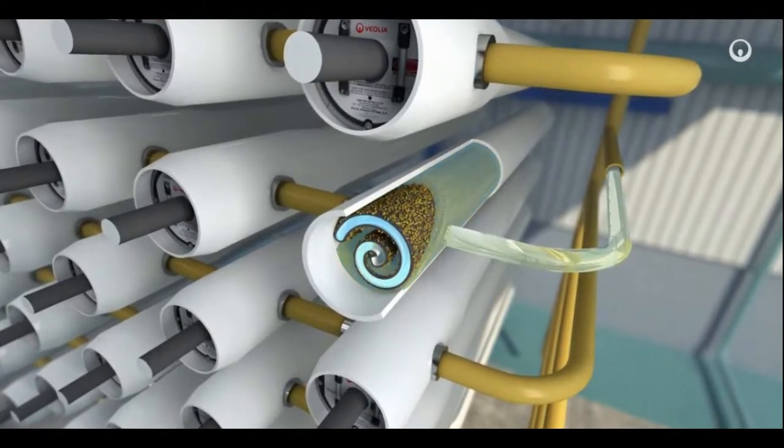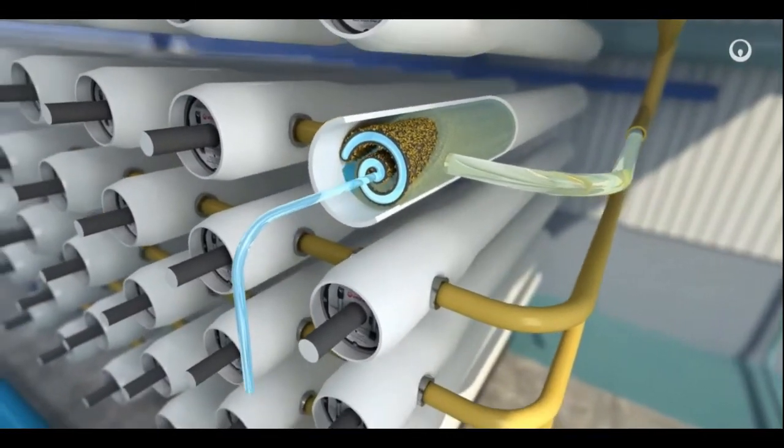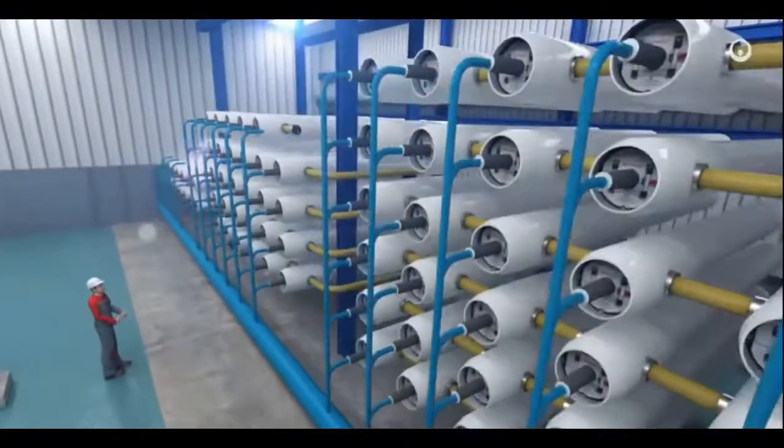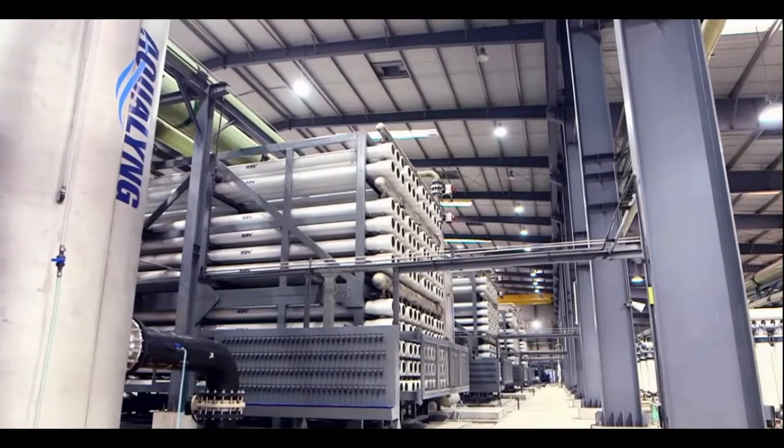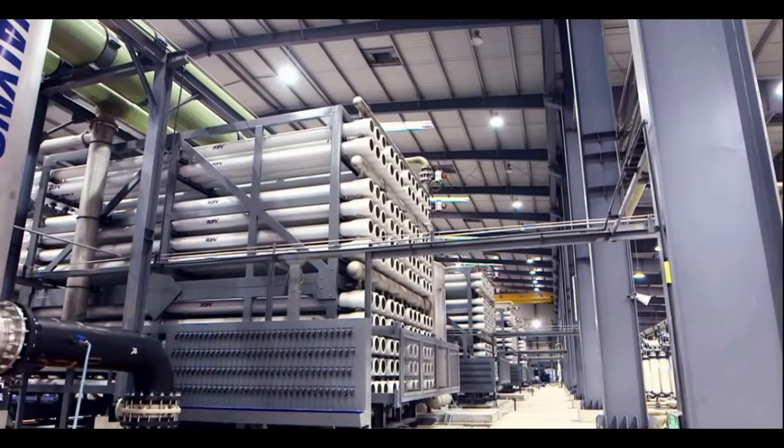This process works at about 50% efficiency, meaning that every two gallons of seawater introduced to the system will result in one gallon of fresh water and one gallon of hypersaline brine at about two times the water's original salinity. Today, approximately 60% of seawater desalination globally is done through the reverse osmosis process.